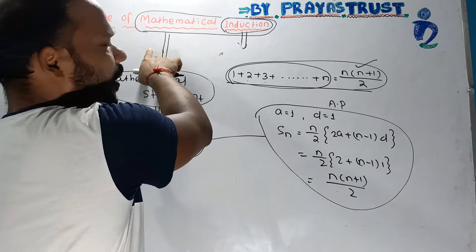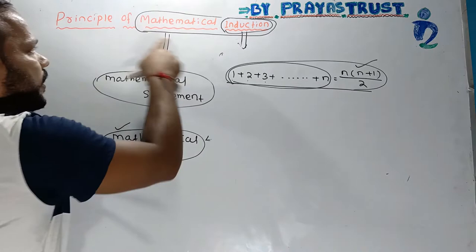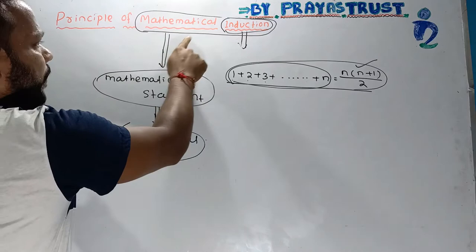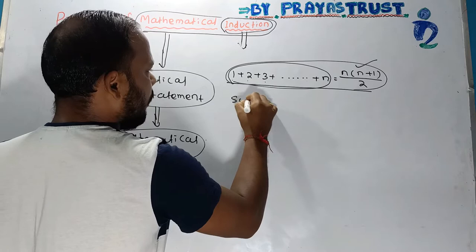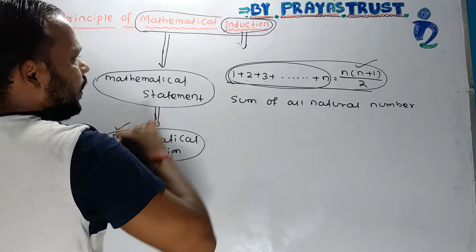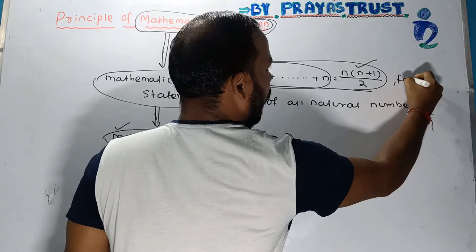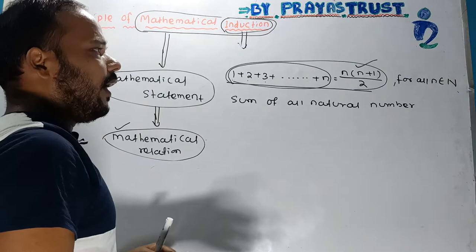This part you have already covered in 10th class. The idea here is not just to derive the relation, but to understand how we can prove the left hand side equals the right hand side using the principle of mathematical induction. The series is 1 + 2 + 3 + ... + n, which is the sum of all natural numbers. We want to prove this for all n belonging to the natural numbers, meaning n = 1, 2, 3, 4, 5, and so on.